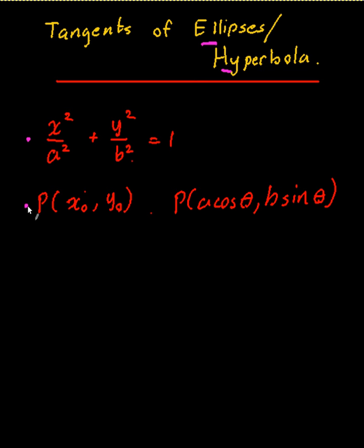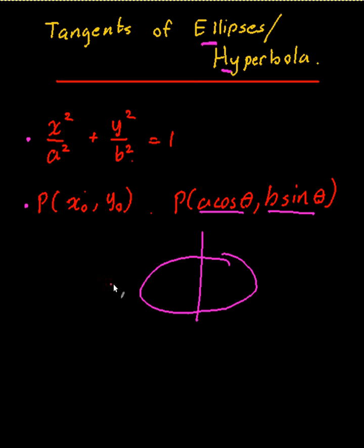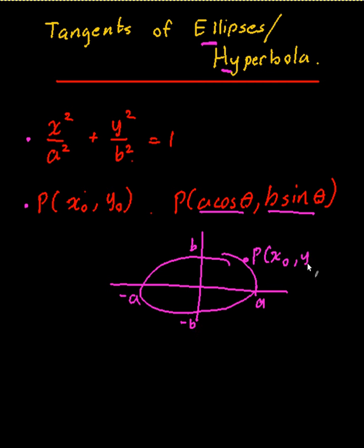Suppose I have a point P at (x0, y0), which I can also write as (a cos θ, b sin θ) on an ellipse. So this is a rough drawing — that's point A, B, negative A, negative B. P is an arbitrary point that I can write as either (x0, y0) or (a cos θ, b sin θ). What I'm really after is how to find the equation of a tangent of an ellipse or a hyperbola.